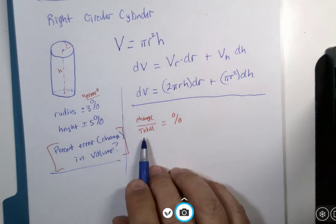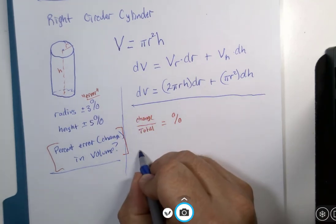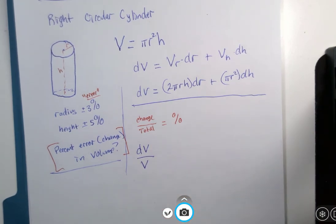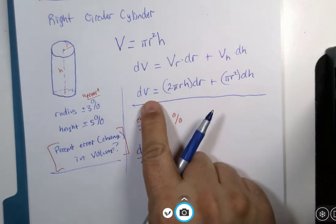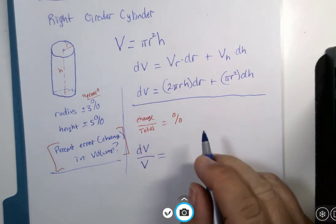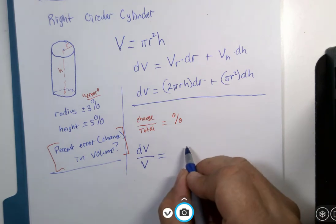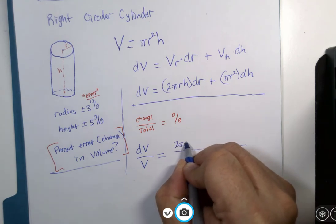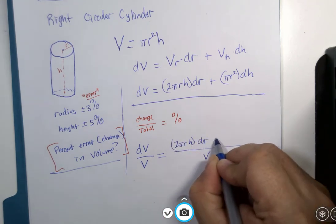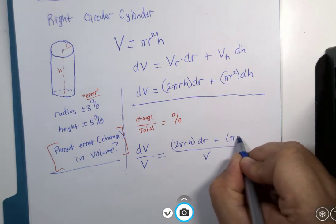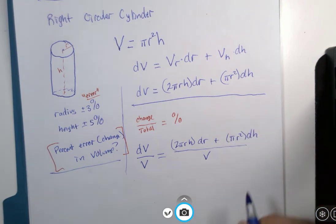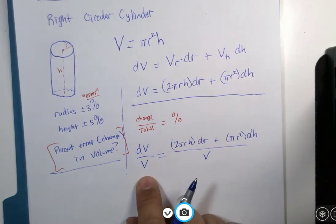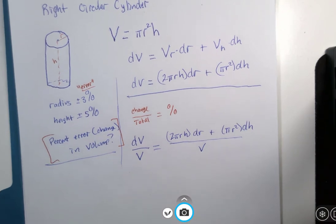Well, the change is the notation dV, and the total would be the actual volume. But you can't just divide by volume without dividing both sides by volume. And this side does not look any better now, even though I've got my percentage going here. So watch this little magic trick.